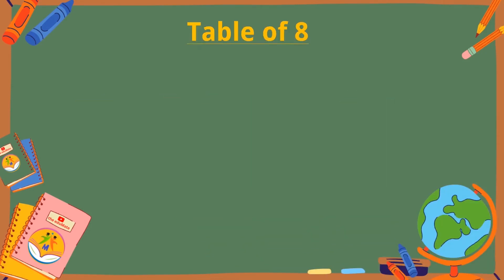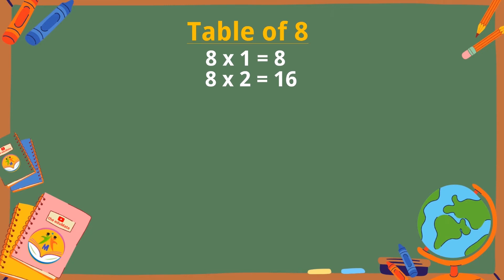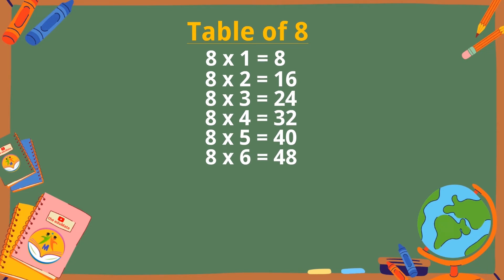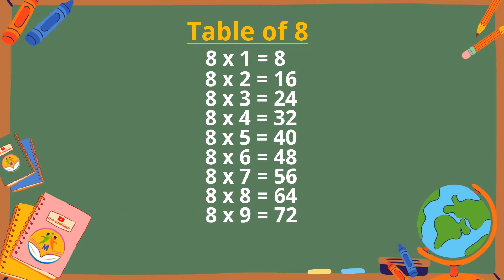Table of 8. 8×1 is 8, 8×2 is 16, 8×3 is 24, 8×4 is 32, 8×5 is 40, 8×6 is 48, 8×7 is 56, 8×8 is 64, 8×9 is 72, 8×10 is 80.